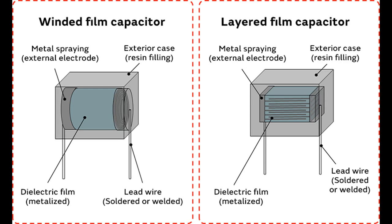Polypropylene film capacitors use a polypropylene (PP) film as the dielectric material. They offer excellent temperature stability, low dielectric losses, high insulation resistance, and are suitable for high-performance applications. They are commonly used in audio systems, precision electronics, and applications requiring high accuracy and reliability.